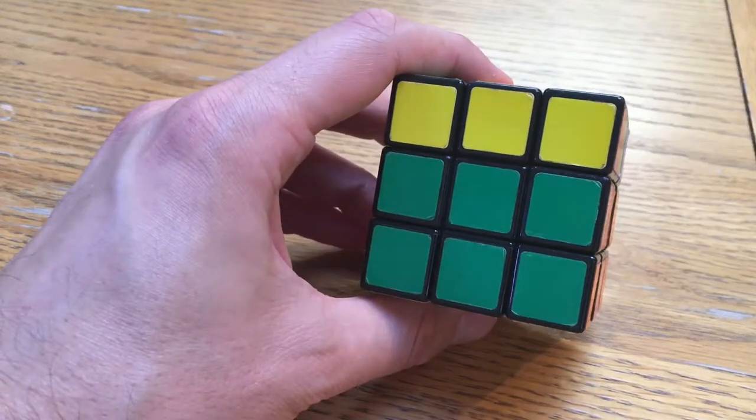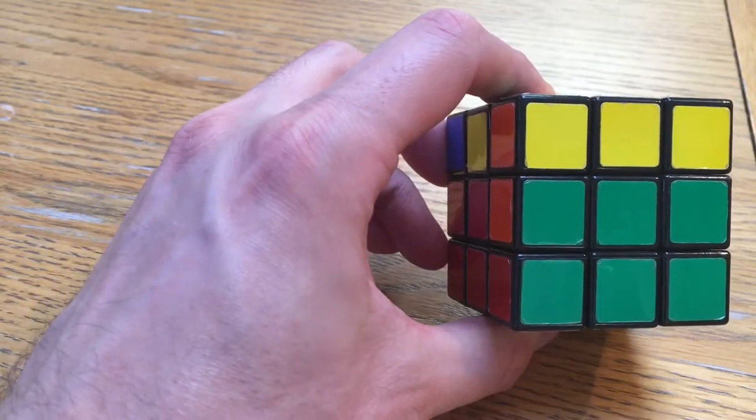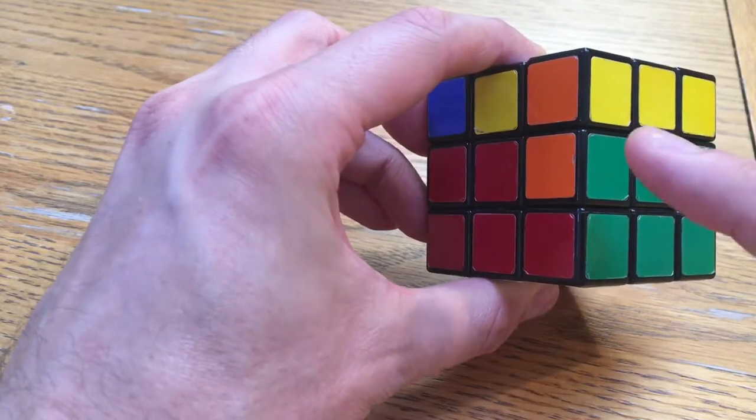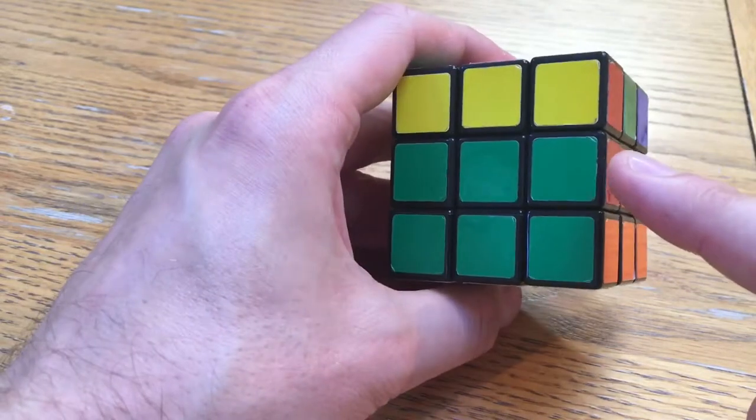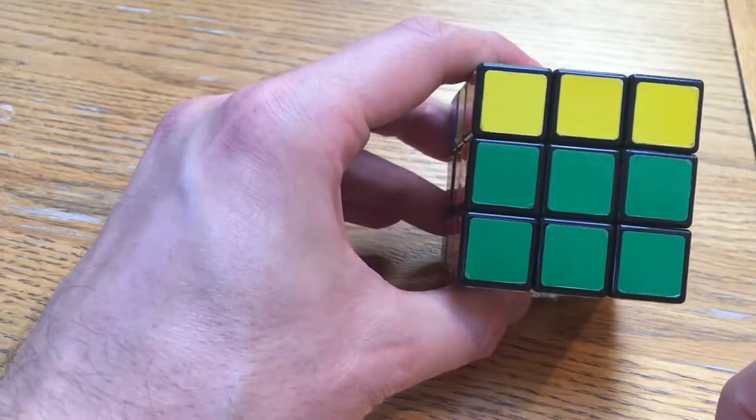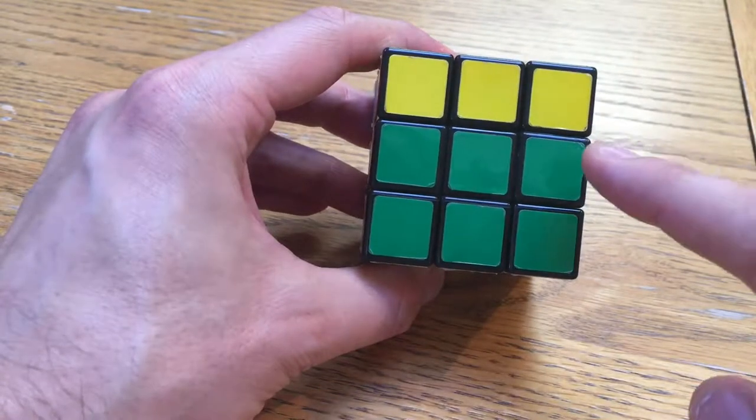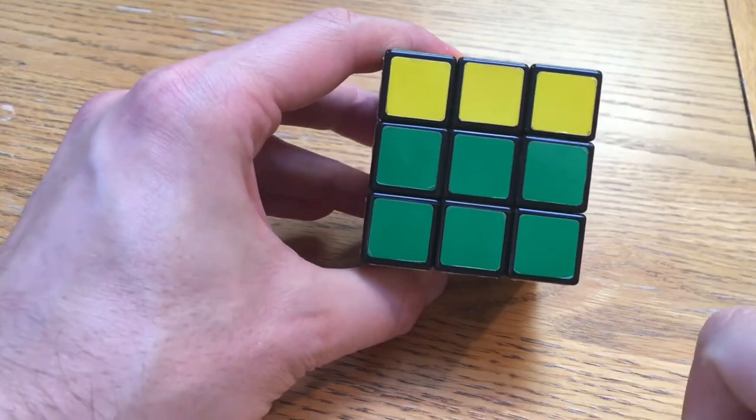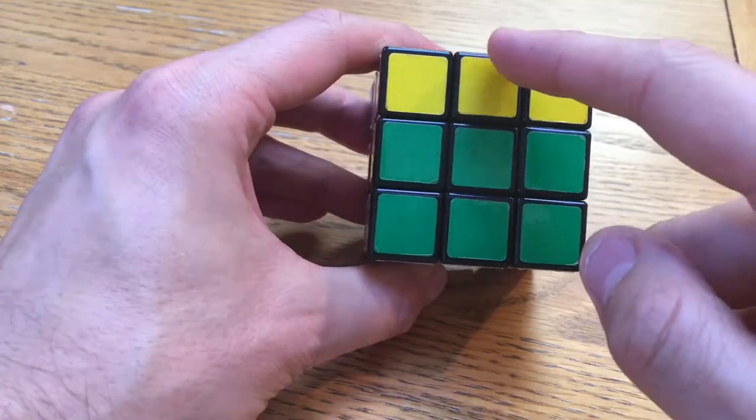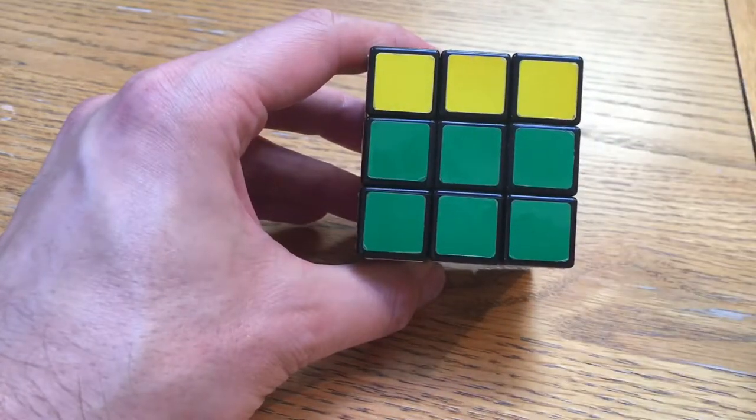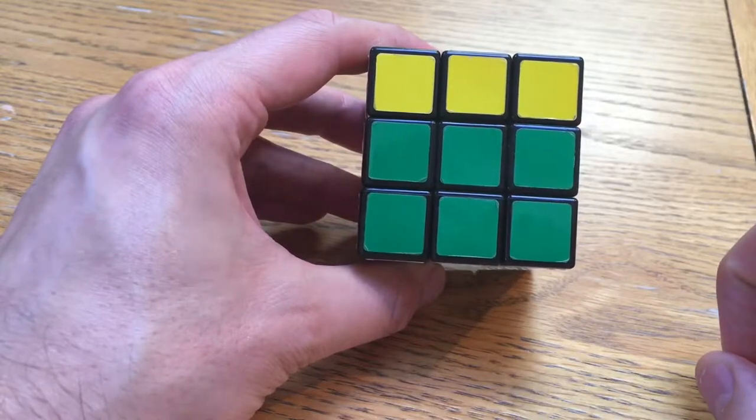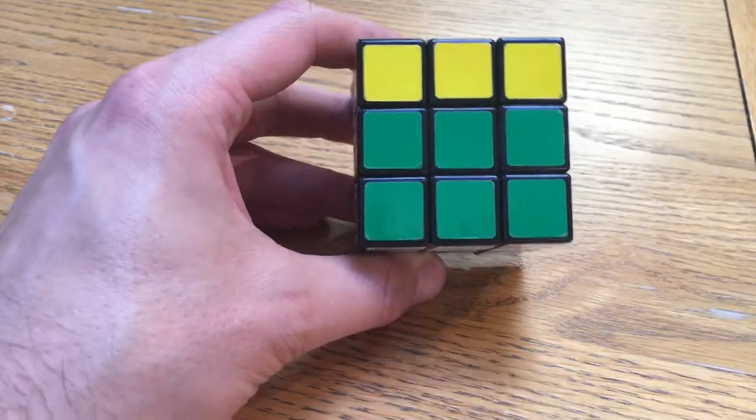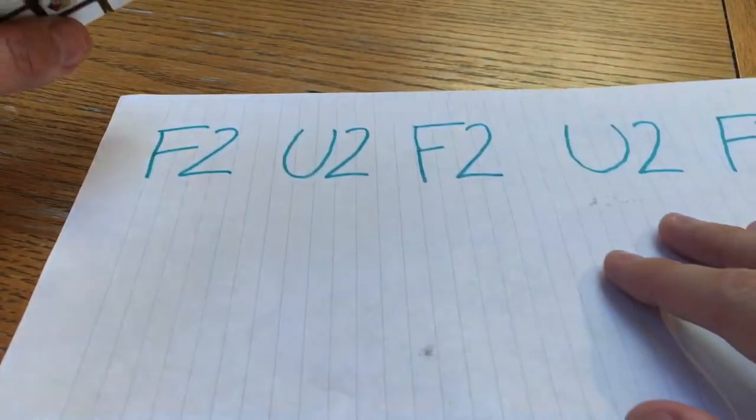So this time I'm going to show you another algorithm to help you solve the middle layer a little bit quicker. Sometimes you get a situation where two edge pieces need to be swapped and the beginners method will ask you to move one out, perform the algorithm that moves a piece from the side to the top, and then put it back in place. That's quite inefficient when there is a really simple algorithm to simply swap two edge pieces around. And here it is.